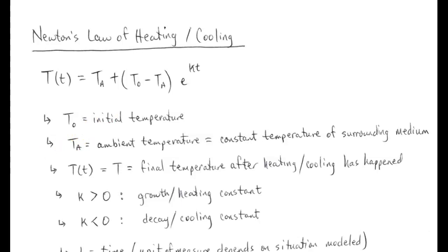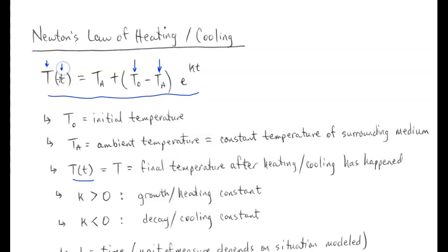First, we see this equation. T sub zero is our initial temperature — the initial temperature of whatever object we are looking at that will be heated or cooled. T sub A is the temperature of the environment surrounding the object. Big T of little t: big T means temperature, little t means time. The K in our exponent will be either our heating constant if K is positive, or cooling constant if K is negative.